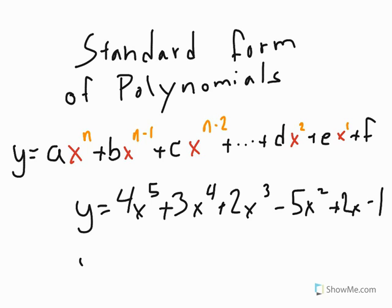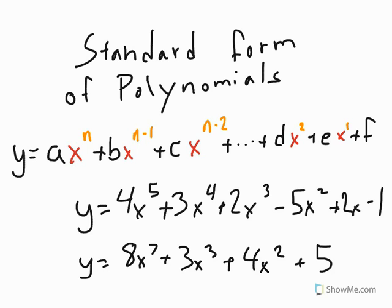Now, also, we could have had something like y equals 8x to the 7th plus 3x cubed plus 4x squared plus 5. Here we don't have every single number in that order, but it still starts with the highest power and goes to the lowest power, so it's still considered standard form.